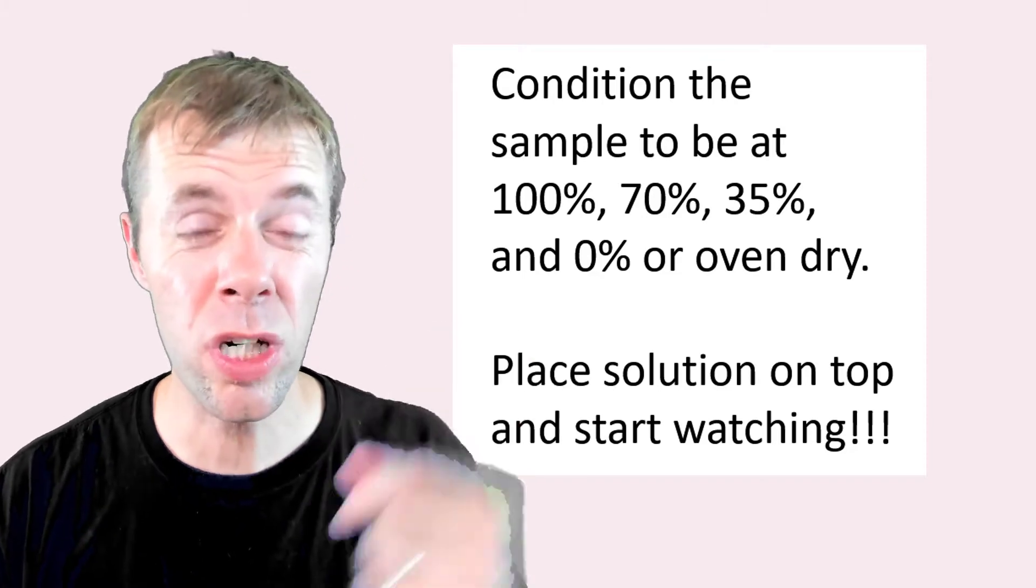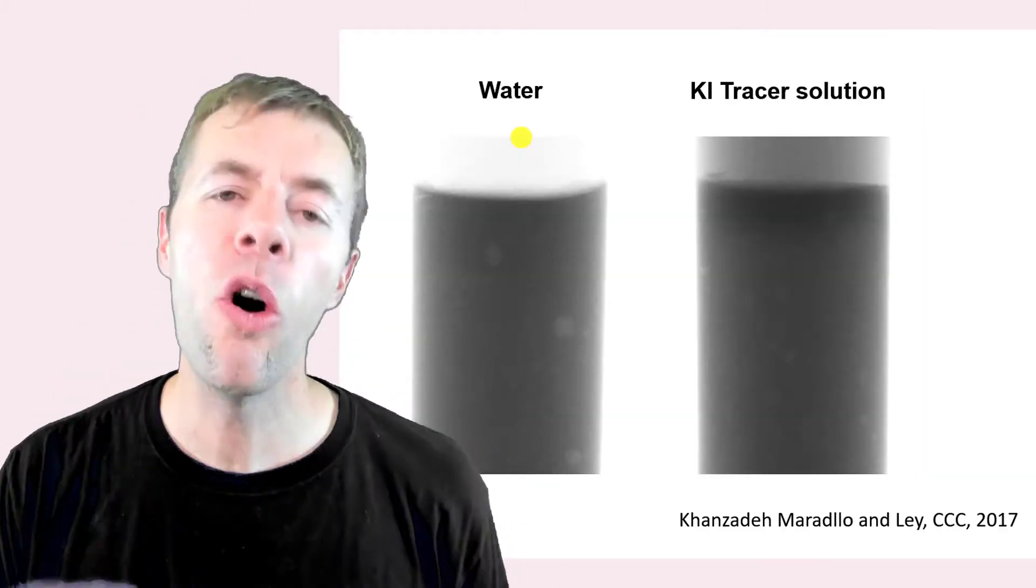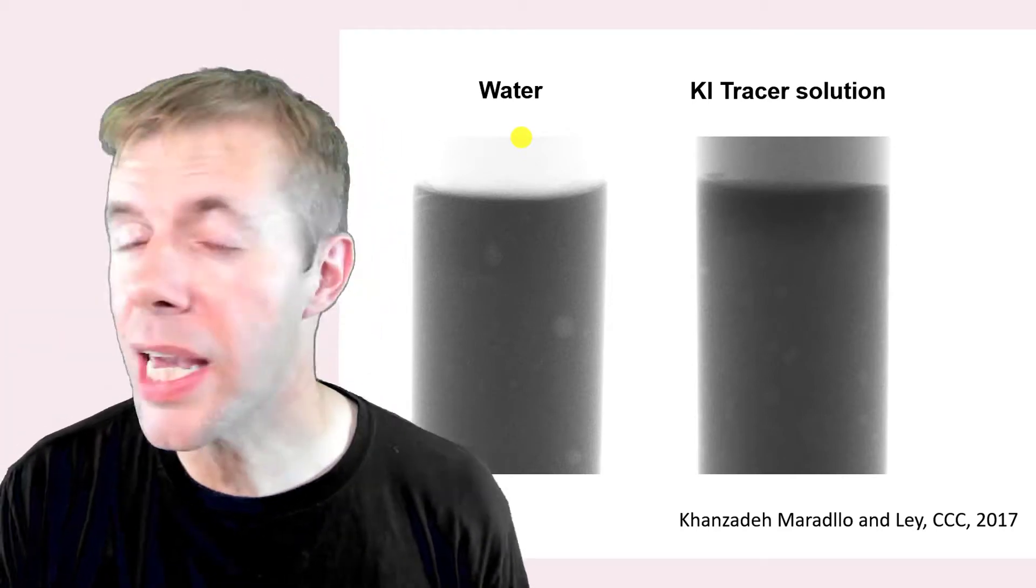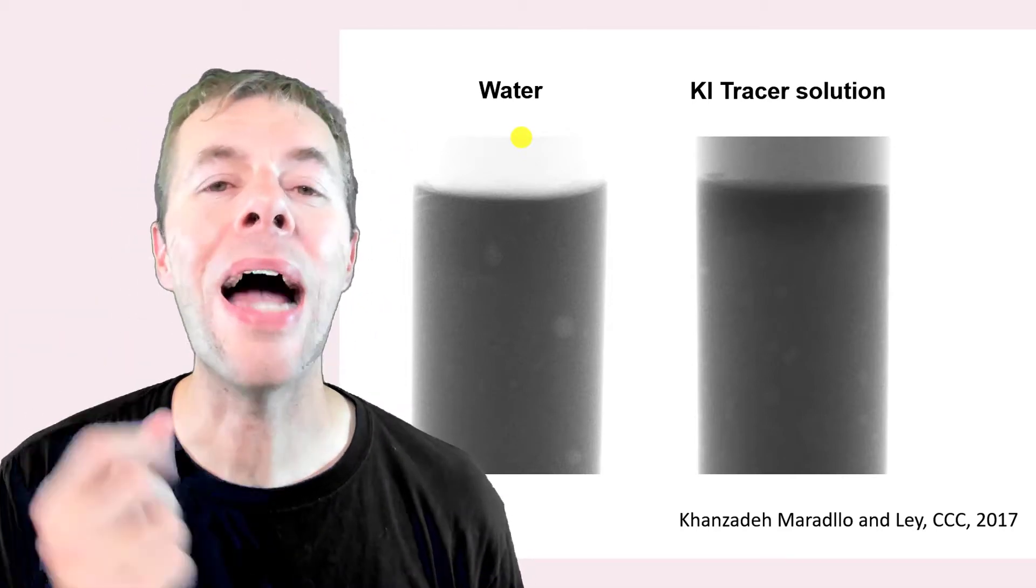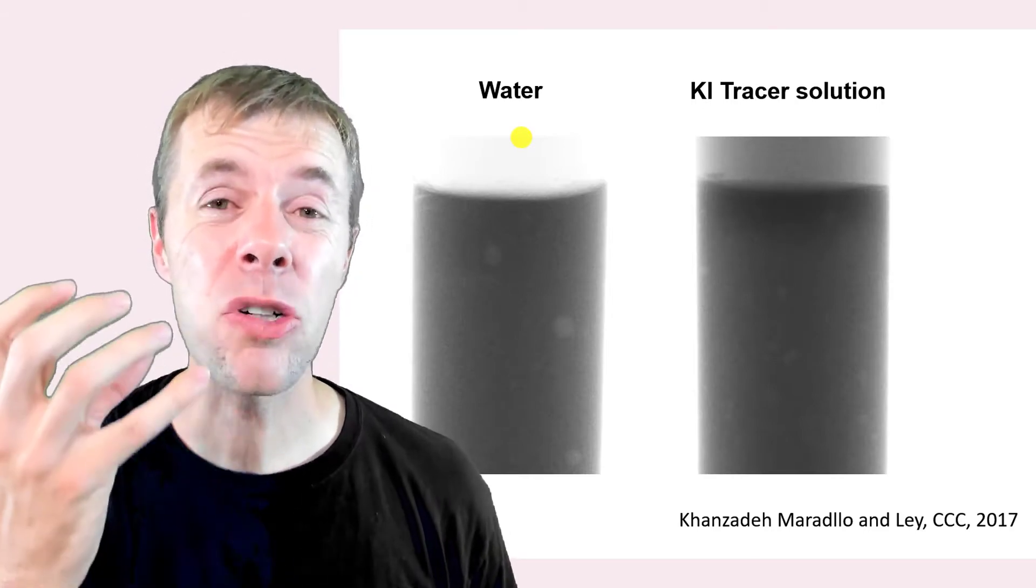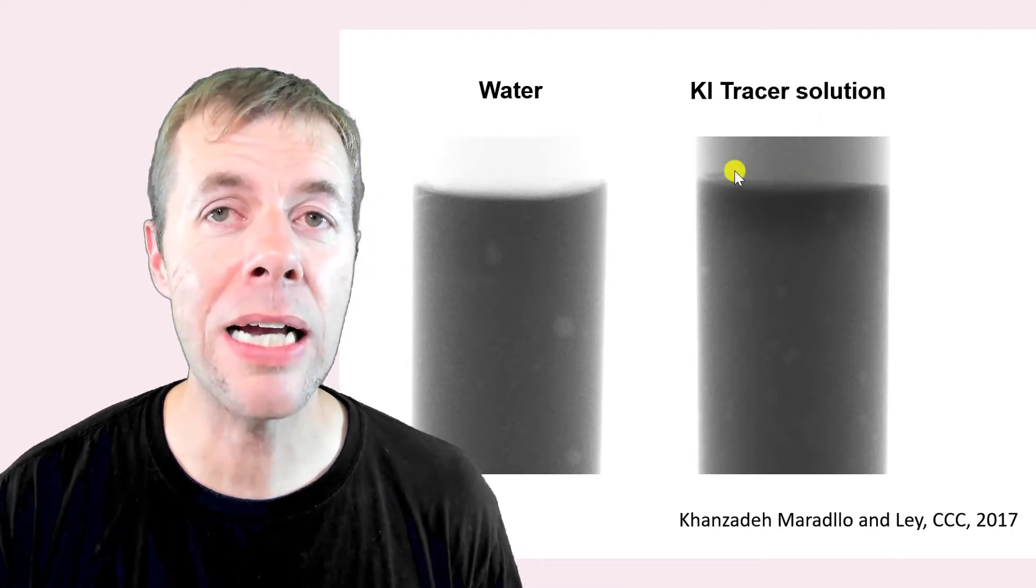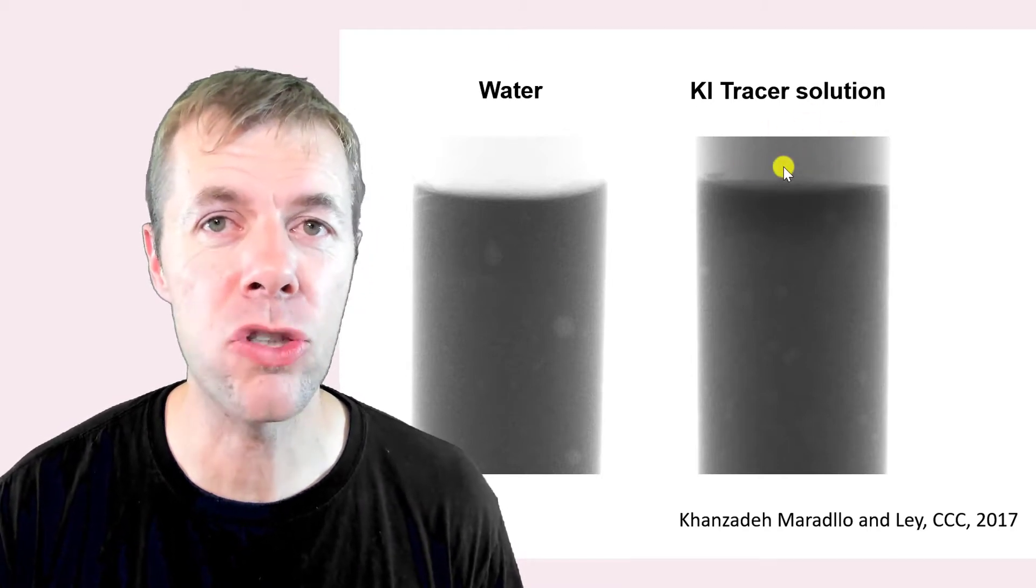So we're going to put the solution on top and then we're going to watch what happens. Now, how can x-rays see this stuff? Well, if I just put water, x-rays can't see water. But I'm going to put iodine and x-rays can see iodine. Iodine actually absorbs x-rays. It becomes dark.